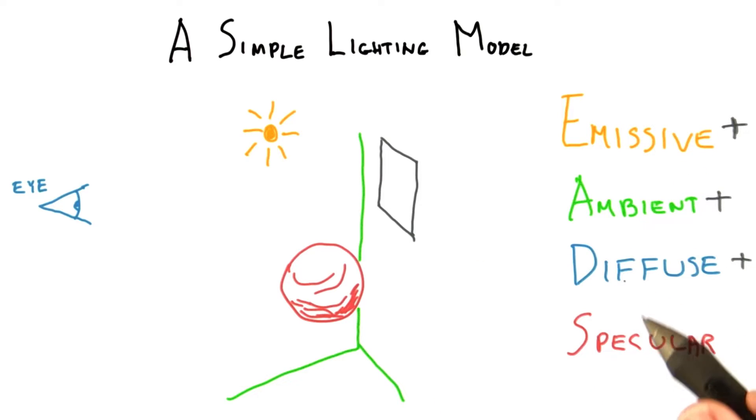When performing interactive rendering, the standard way to think about a material's appearance is as a few different components added together: emissive, ambient, diffuse, and specular.